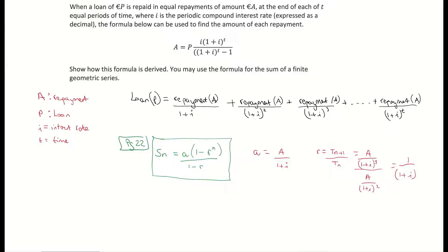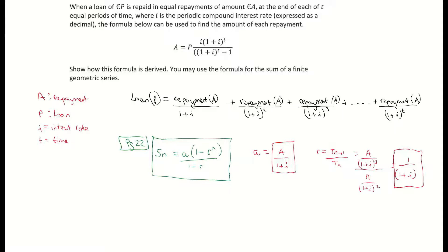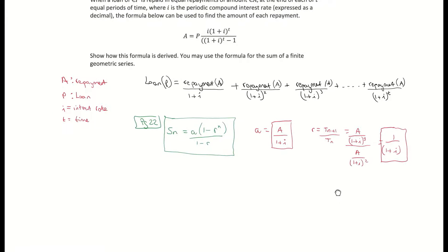To get from A to A you're just multiplying by 1, and to get from (1 plus I) to (1 plus I) squared you need to multiply by (1 plus I). So my value for R here is 1 over (1 plus I), and my value for A is A over (1 plus I). Now we just need to fill in our formula — there's going to be a little bit of algebraic manipulation involved. Let's write down everything we know and fill in our formula.